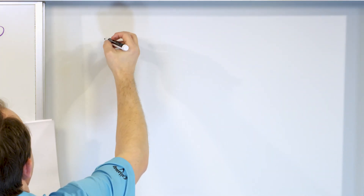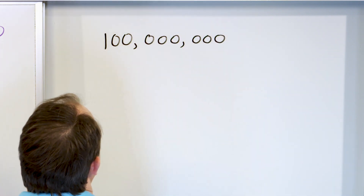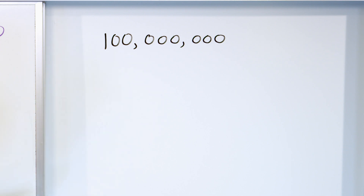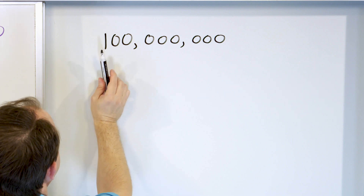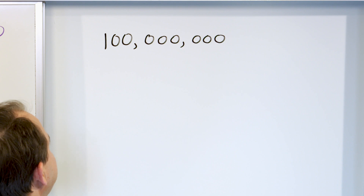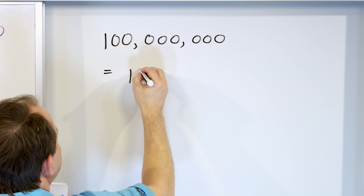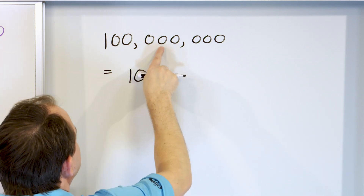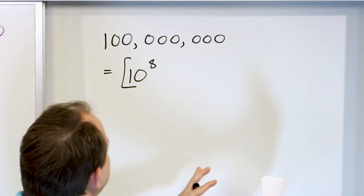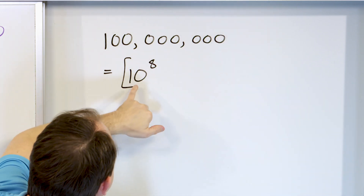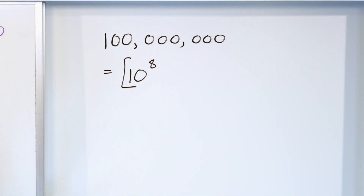Problem seven: convert 100,000,000 to a power of 10. This number in words is 100 million — this is the millions place, the 10 millions place, and the 100 millions place. How do we write it as a power of 10? We know it's a 1 followed by zeros, so we count: 1, 2, 3, 4, 5, 6, 7, 8 — giving us 10 to the power of 8. If it's a 1 followed by a bunch of zeros, just say it's 10 raised to the power of however many zeros there are.